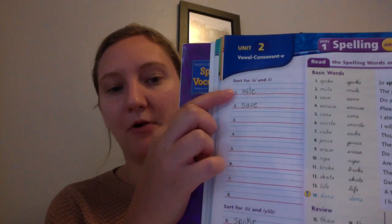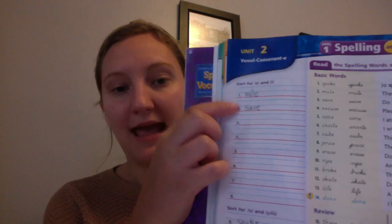So this first one up at the top, it says sort for long A and long I. So A and I sounds like mile. I wrote mile up here because I makes a long I sound in mile, and save because it has a long A sound.